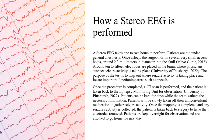A Stereo EEG takes one to two hours to perform. Patients are put under general anesthesia. Once asleep, the surgeon drills several very small access holes, around 2.3 millimeters in diameter, into the skull. Around 10 to 15 electrodes are placed in the brain where physicians suspect seizure activity is taking place. The purpose of the test is to map out where seizure activity is taking place and locate important functioning areas such as speech.